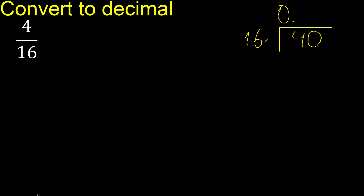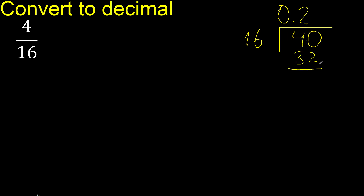40 is not less than 16, so we proceed. 16 multiplied by what number is nearest to 40? 16 multiplied by 3 is 48 — too much. 16 multiplied by 2 is 32. Subtract: 40 minus 32 is 8. Since 8 cannot be divided further as a whole step, we complete with 0.